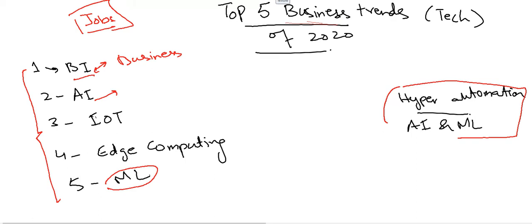Hyper automation uses AI and ML to use these advanced tools to create a new method of work, a new optimized way of work. This is called hyper automation, and this is going to be a very trendy topic of the 2020 industry.